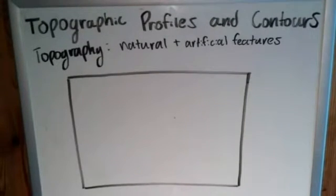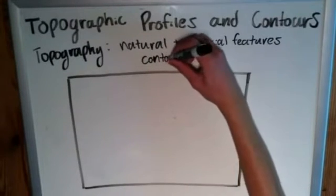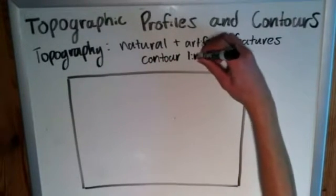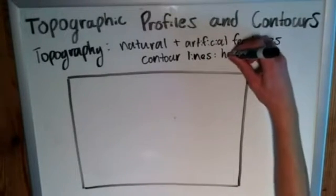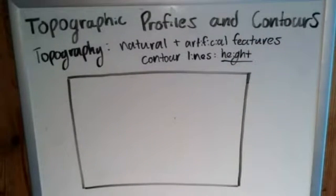So one of the things particularly important to us are what are known as contour lines, which contour lines just show height. And you'll see them incremented. Usually each contour line represents a certain height, a new height, and they'll be incremented by certain numbers, maybe 10, 100, and then insert your unit there, whether it be feet, meters, anything like that.